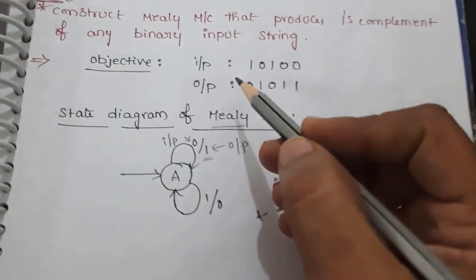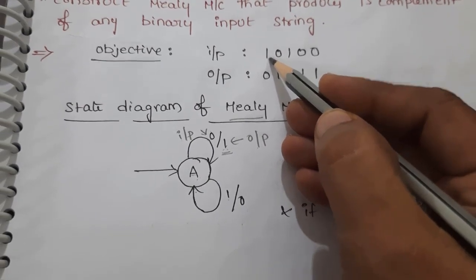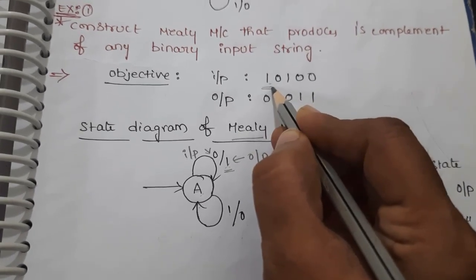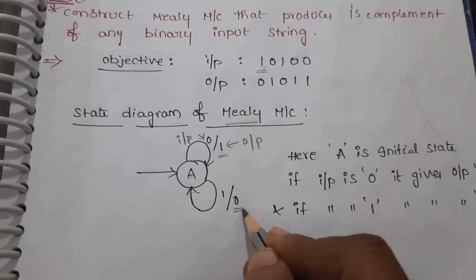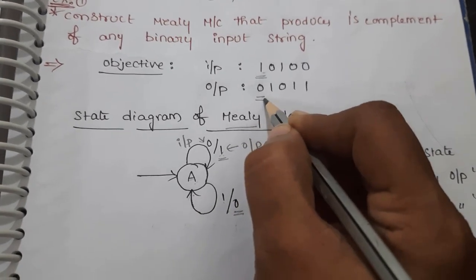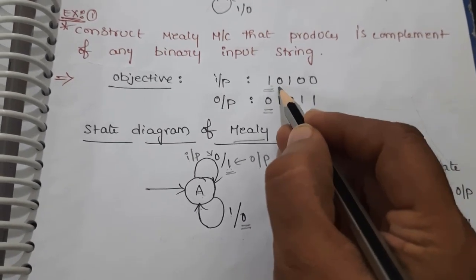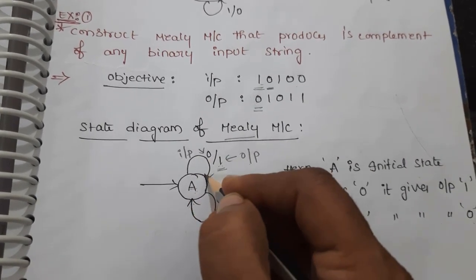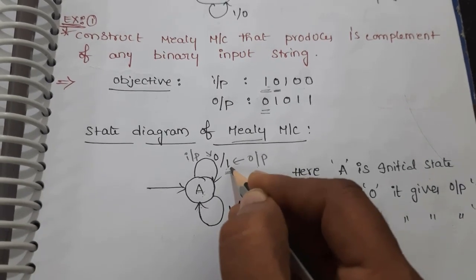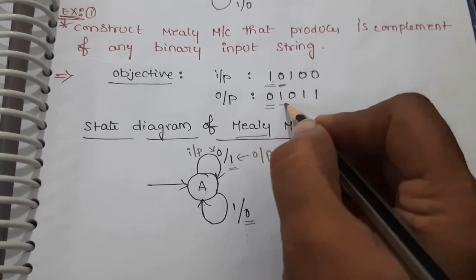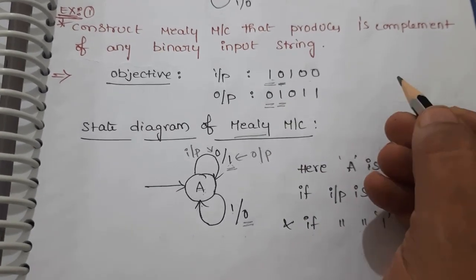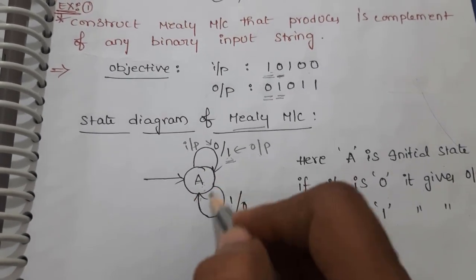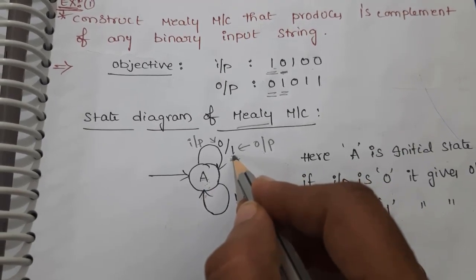For example, let's check with a binary input string. When one is the input and we are in state A, its output will be zero — it is complemented. Next, the next digit in the input string is zero. We are still at state A, and if zero is given as input then it produces an output of one. So if zero is the input, its output will be one without going to any other state — it remains in the same self-state. Whether zero or one is the input, it stays in that particular state with only the output changing.